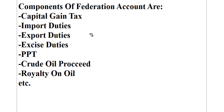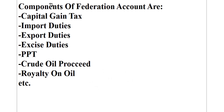You can see that this account is very simple. If I present you with a question paper and all these items are listed one after the other — capital gain tax, import duties, export duties, and so on — you total them and you get your federation account. That's all.